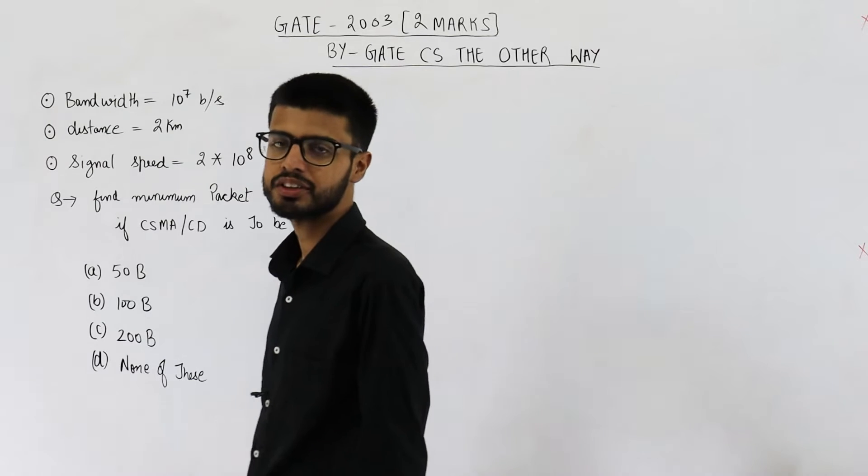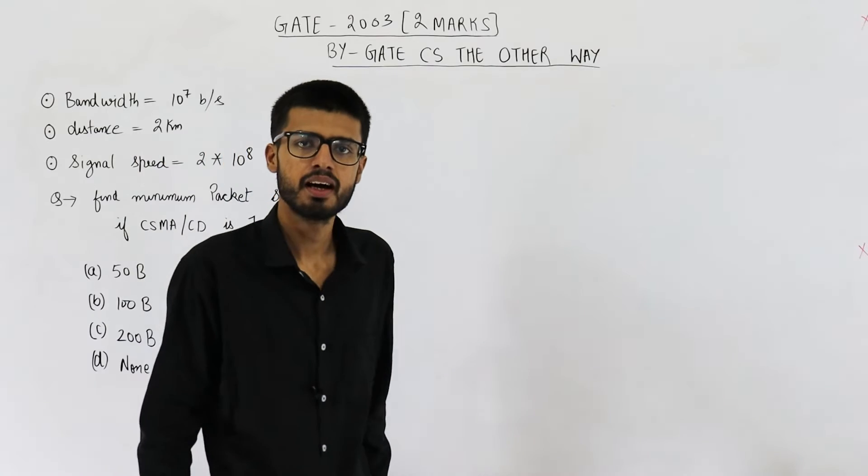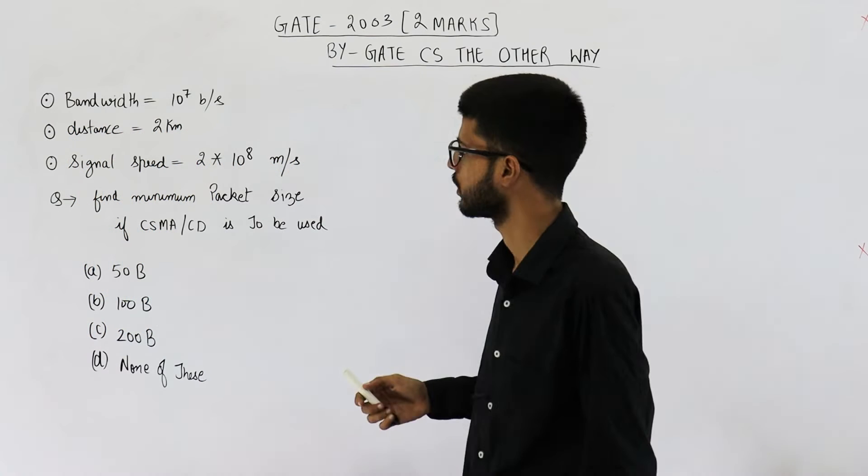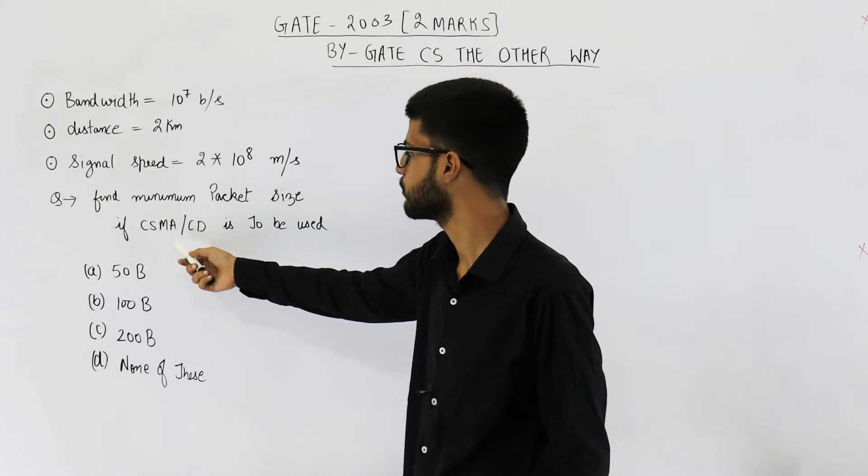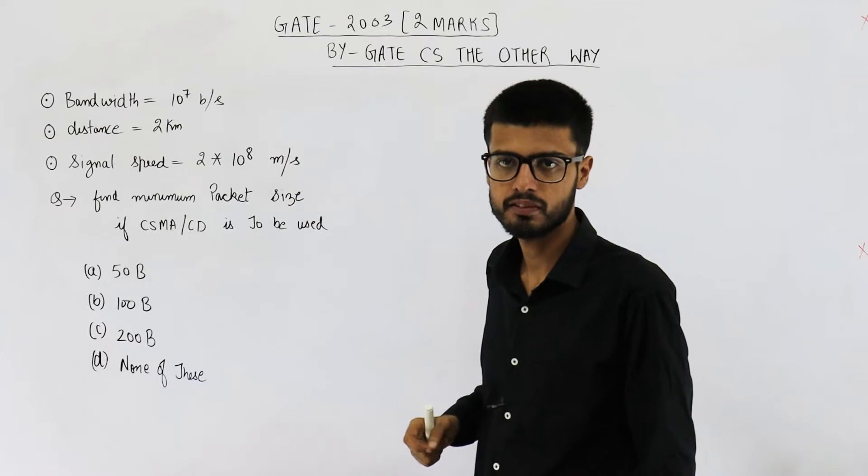Hello people, welcome back. This question is from GATE exam of 2003. It's for two marks. I'll just display the image. You can read the question if you want to. Anyways, I've noted down the important data that is given in the question. They are saying find minimum packet size if CSMA/CD is to be used, and this is the data that is given in question.